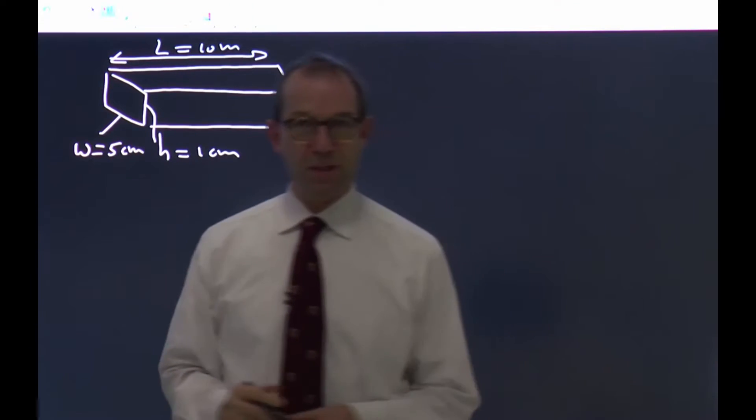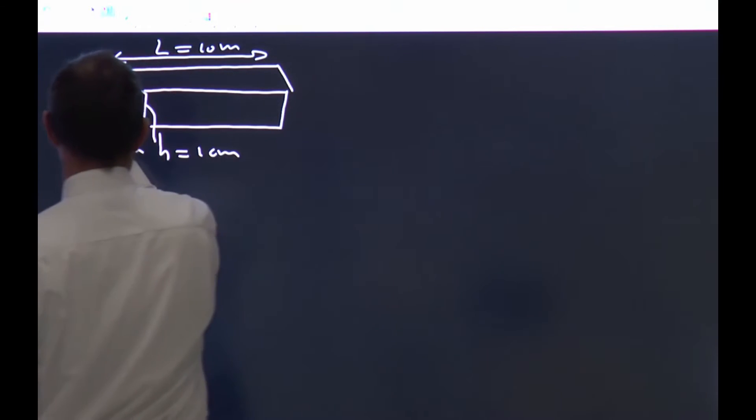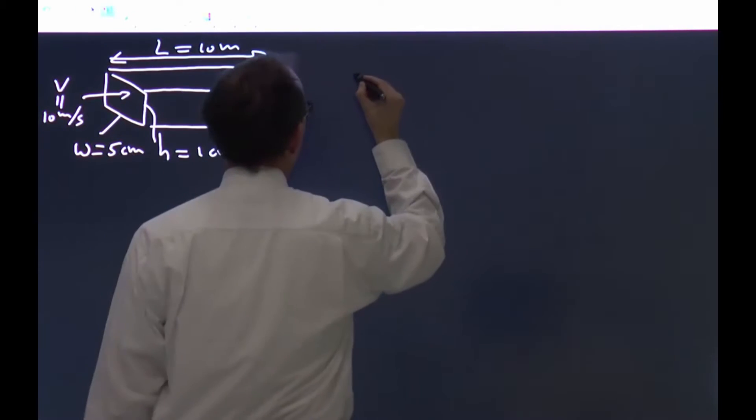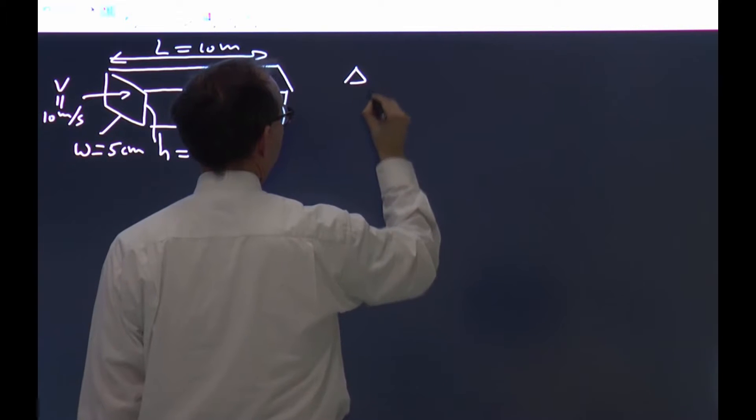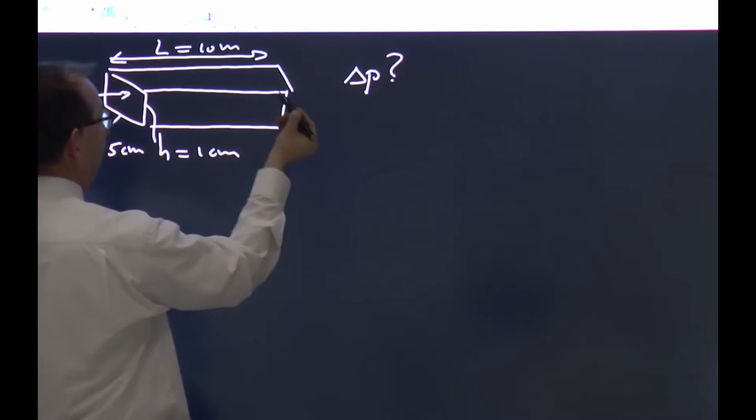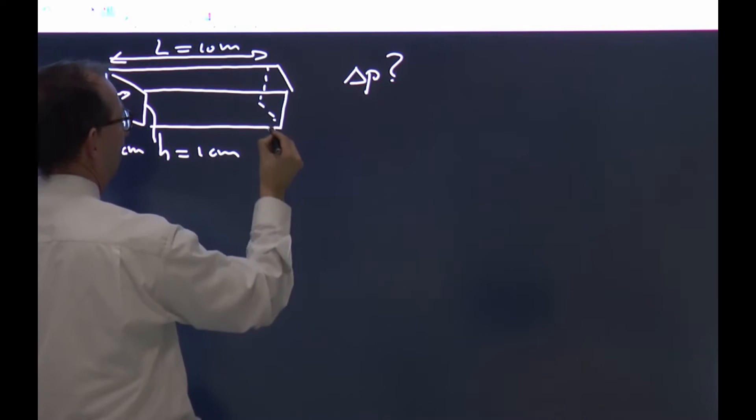Water is flowing through this at an average velocity v of 10 meter per second. And the question we like to know, what pressure drop is required? Rephrased, how much higher is the pressure here than at the exit?